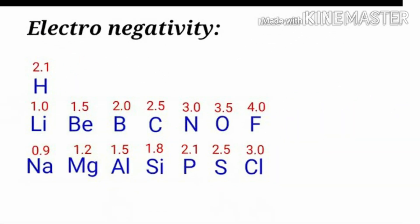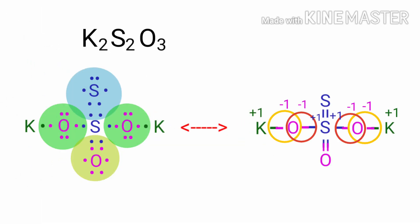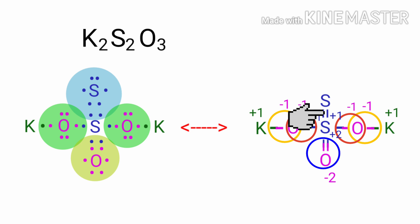Oxygen has more electronegativity than sulphur. So in the S double bond O, the oxygen can take the two bonds towards itself. Therefore the oxidation number of oxygen is minus 2 and the oxidation number of sulphur is plus 2, because there are two bonds. In the S-S bond, the two sulphur atoms have the same electronegativity, so there is no transfer — the oxidation number of the two sulphur atoms from this bond is zero.